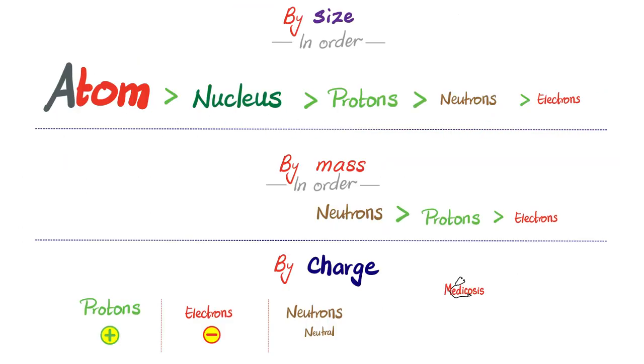Almost nothing. So let's rearrange our particles in order of their size. The biggest will be the atom, and the smallest will be the electron. Atom is followed by the nucleus, then the proton. Protons are larger than neutrons, which are larger than electrons. Next, let's arrange them by mass. Neutrons are heavier than protons, and electron mass is almost nothing. Let's review their charges. Protons, positive one. Electron, negative one. Neutrons, neutral, which means zero.